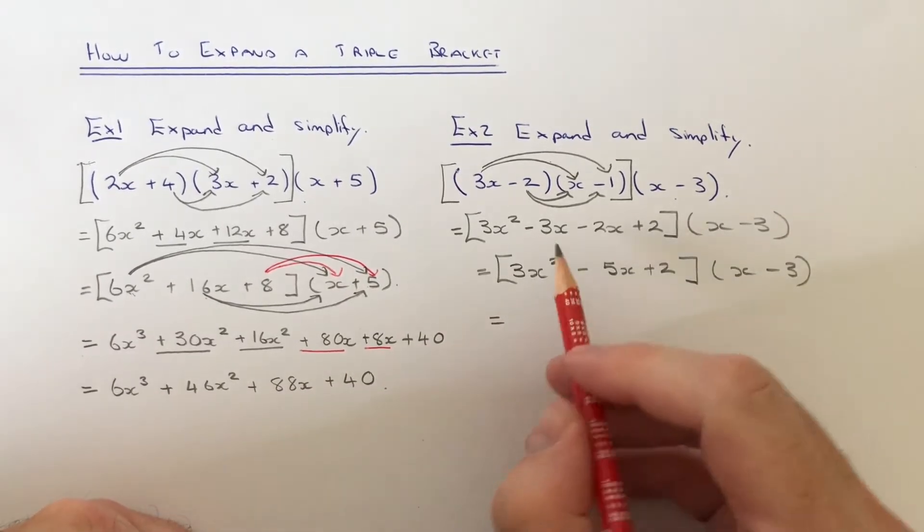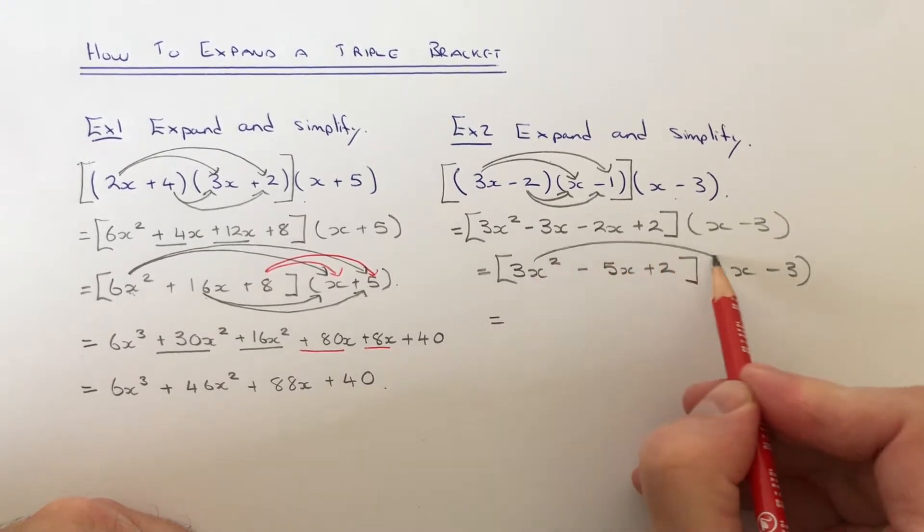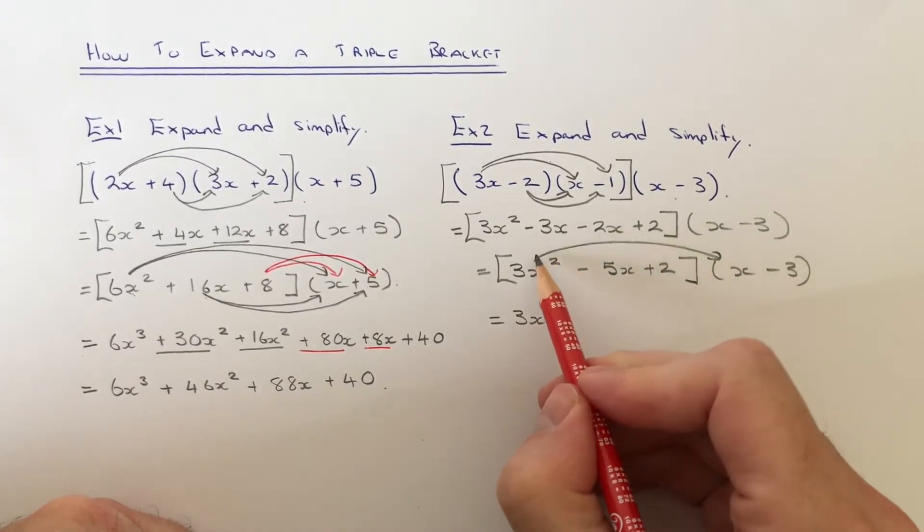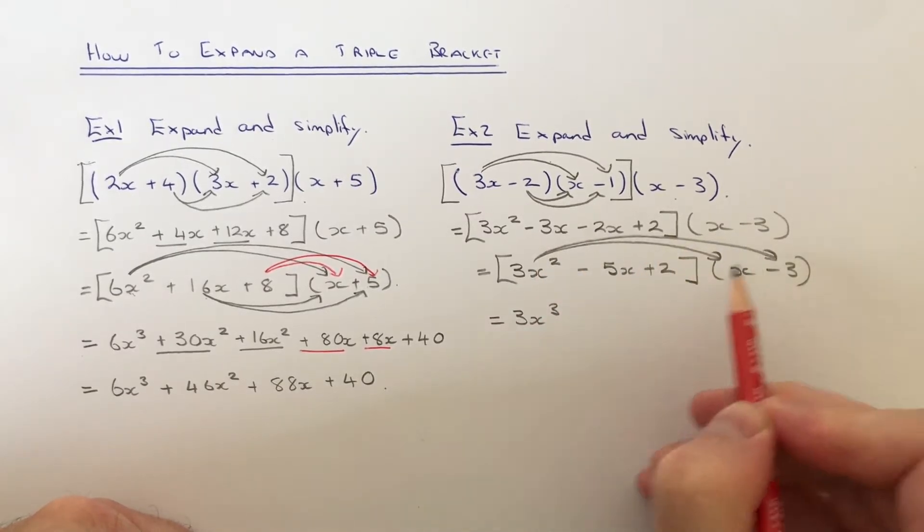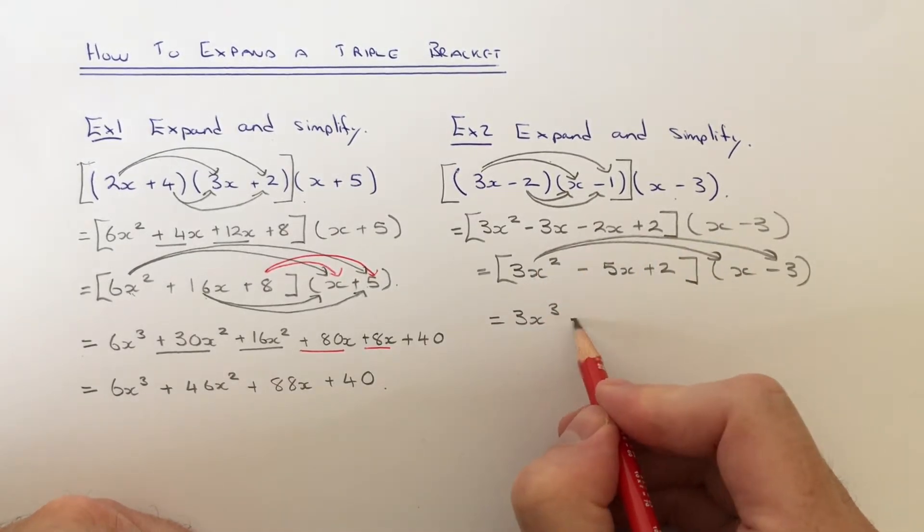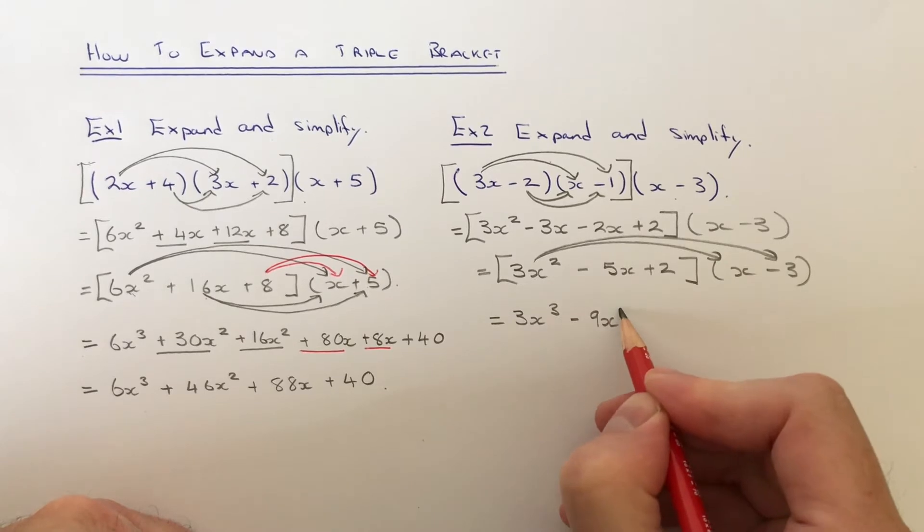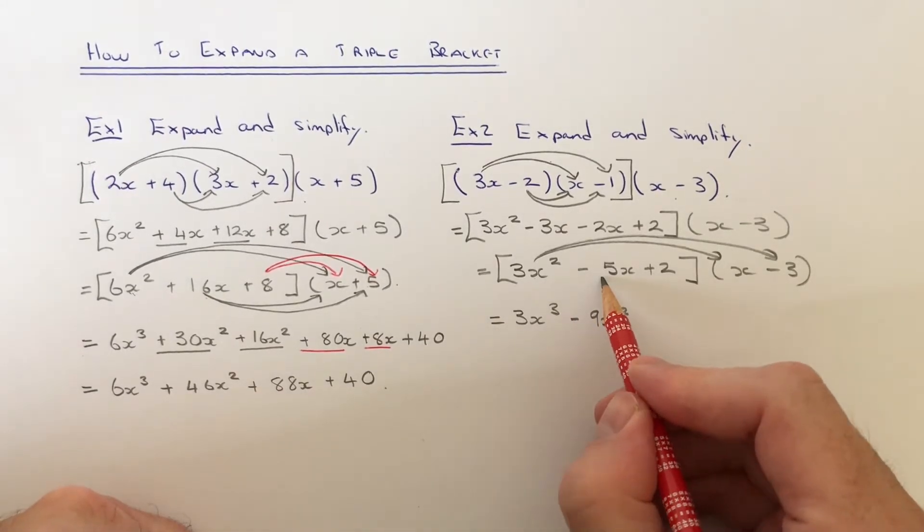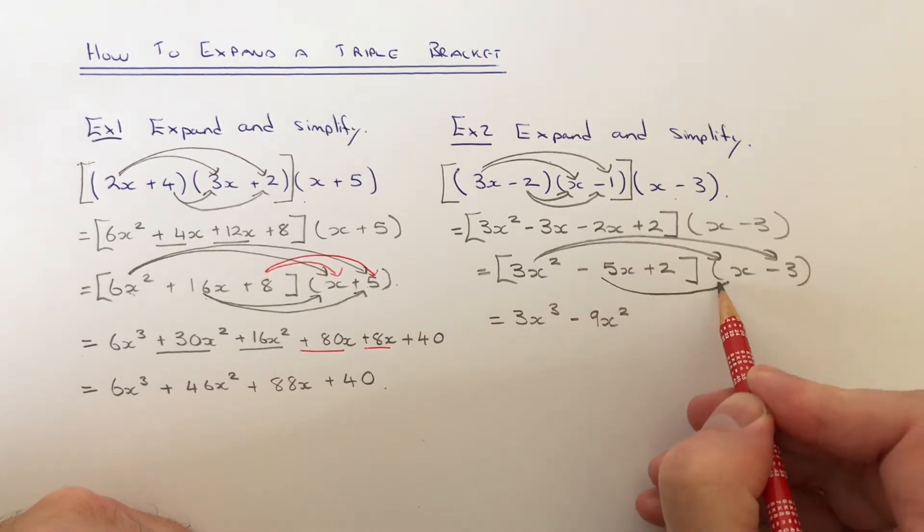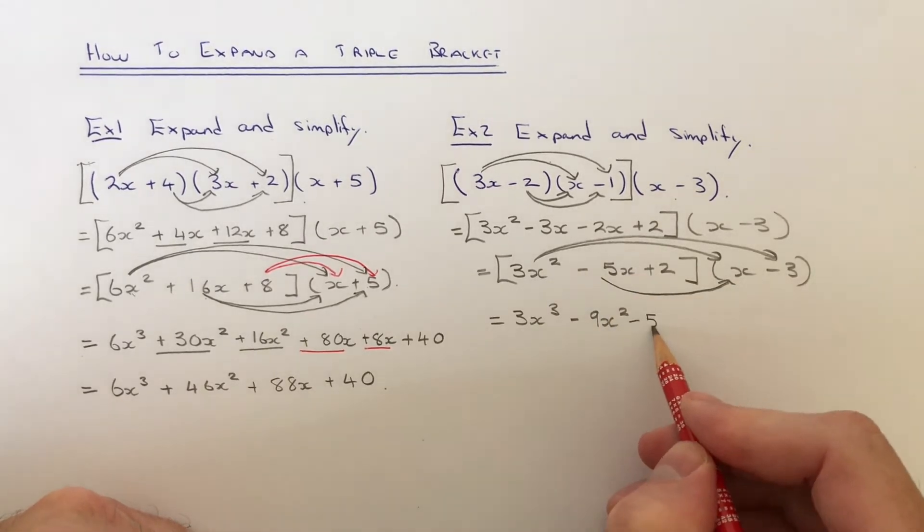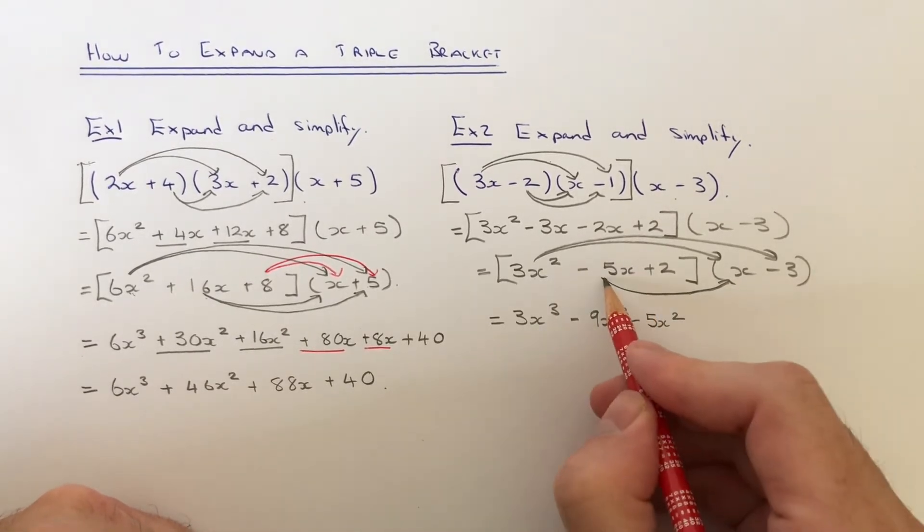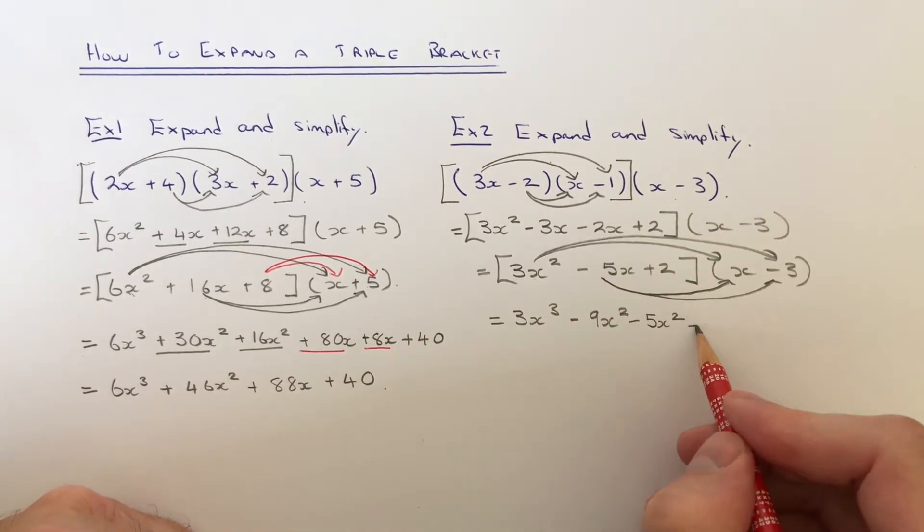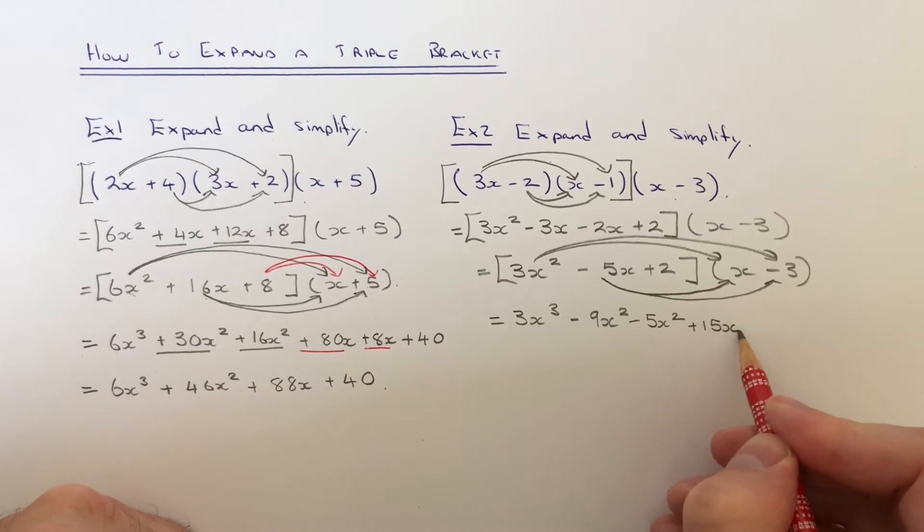Let's start off with the 3x squared. 3x squared times x is 3x cubed. 3x squared times minus 3 is minus 9x squared. Then move to the minus 5x. Minus 5x times x is minus 5x squared. Minus 5x times minus 3 is plus 15x.